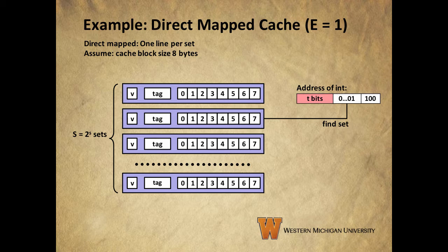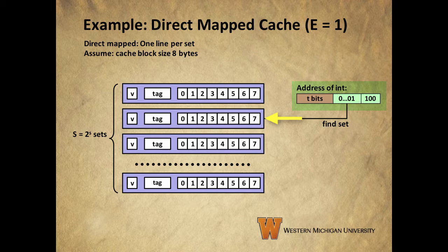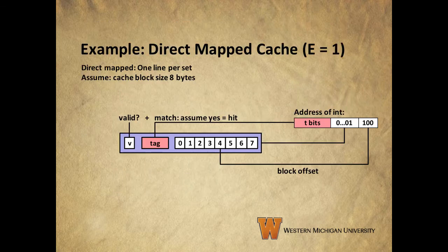Caches are grouped into classes depending on how many lines each set contains — this is referred to as capital E. A cache in which each set contains just one line is referred to as a direct mapped cache. In this example we assume a direct mapped cache with one line per set, where each line contains a data block that is eight bytes long. The address of an integer we need to retrieve corresponds to t tag bits, then the set index field to determine which set we're looking for. In this case the set index indicates set 1, so we know which set and — because there's only one line per set — which line to look at. We then check the valid bit; if it is set we compare the tag in the line to the tag in the address, and if they match we know we have a hit. We need the valid bit to be set and the tag bits to match to get a hit.